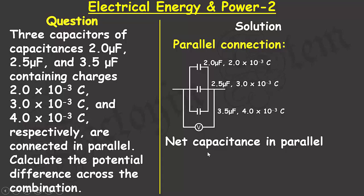Now the net capacitance of the capacitors can be found, since they are connected in parallel, by summing up the values. So 2 plus 2.5 plus 3.5 boils down to 8 microfarad.